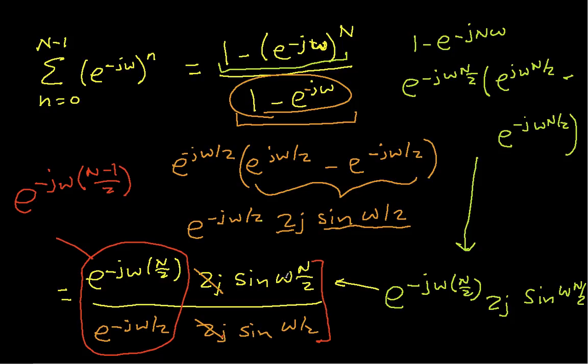So I'm left with this result that actually is pretty tidy. This term, the sin(ω·N/2) / sin(ω/2), this gives me the magnitude of the Fourier transform, and this gives me the phase. Now that's not exactly correct, because this term here will be negative for some values of ω, and that will affect the phase. When this guy goes negative, you'll see sharp jumps in the phase.